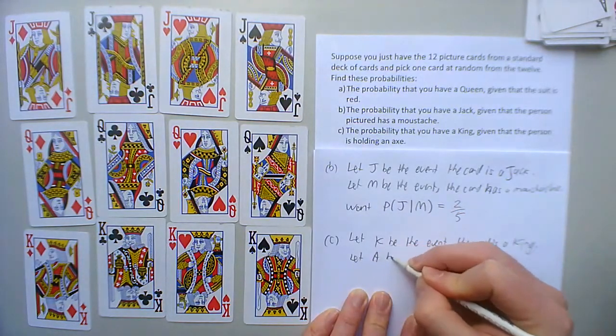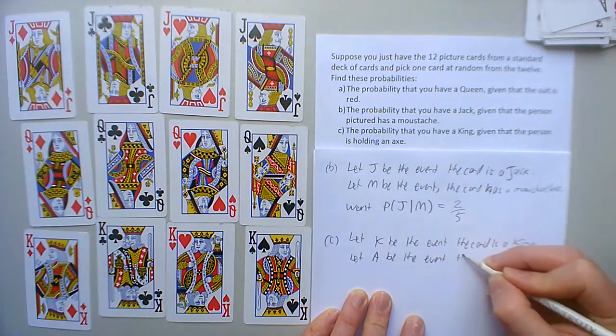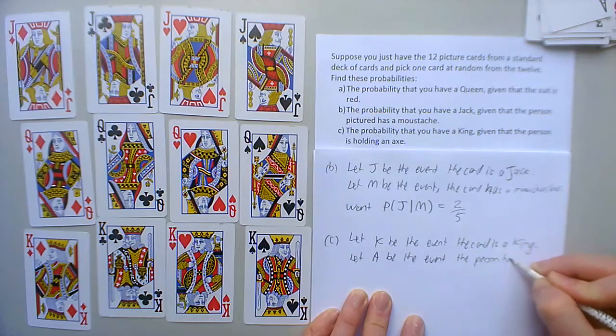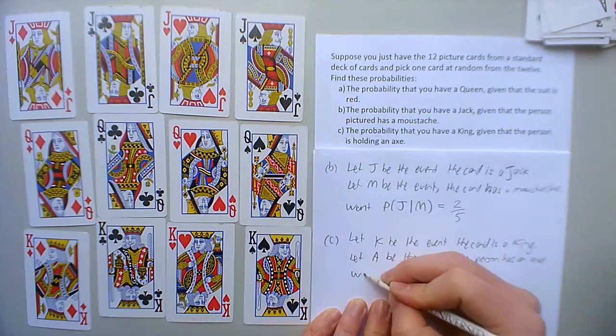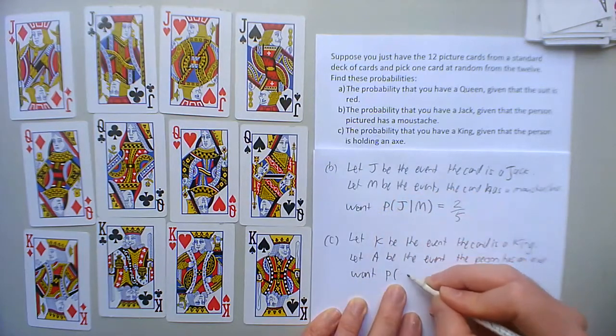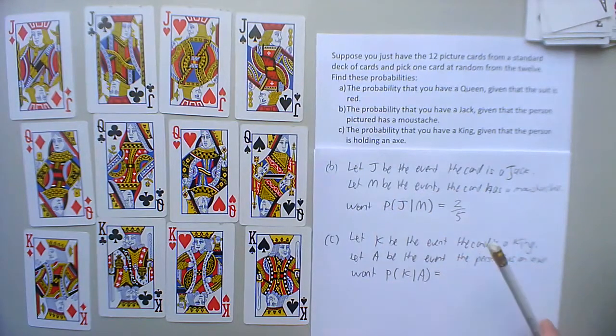I'll do the letters first. Let K be the event the card is a king. Let A be the event the person has an axe. We want the probability of king given axe. Okay, so I need to find all the axes.